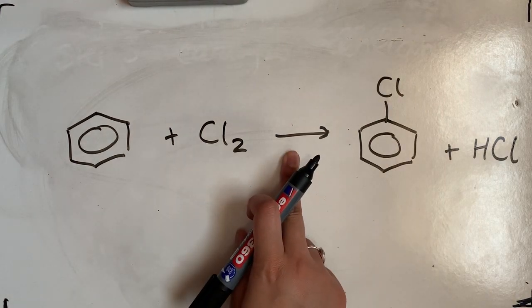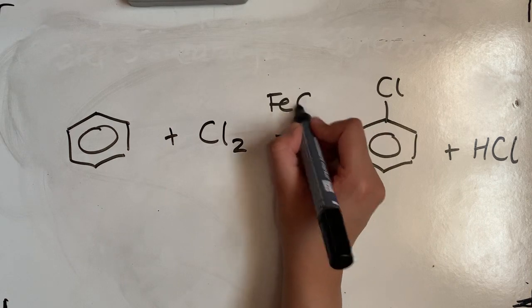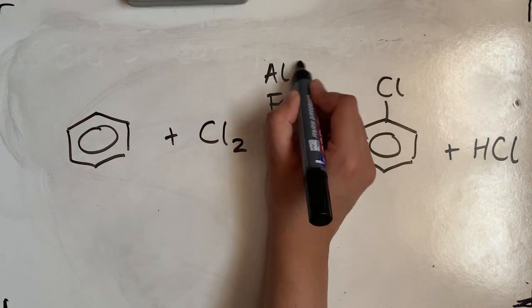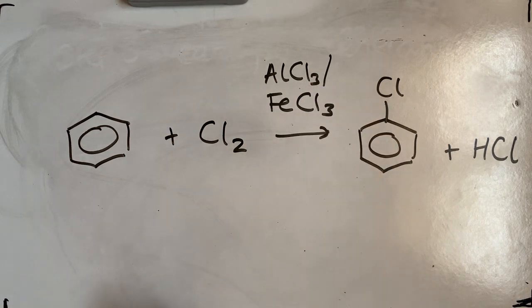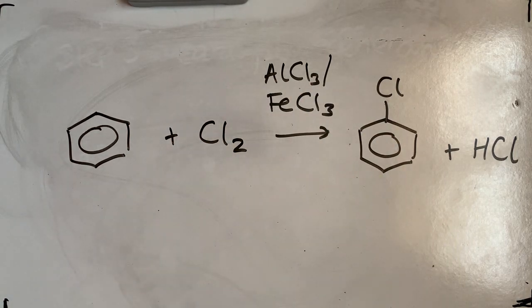In this case, the halogen carrier that you need to use has to have chlorine in it, so FeCl3 is fine. You could have used AlCl3, either of the two is fine, as long as the halogen here matches the halogen at the end of the halogen carrier.